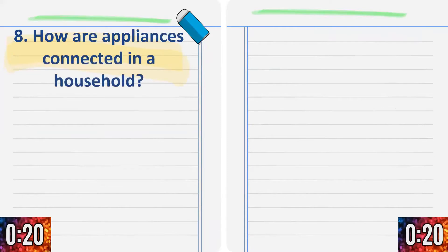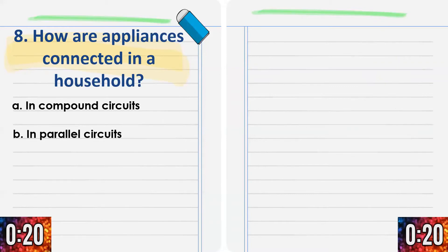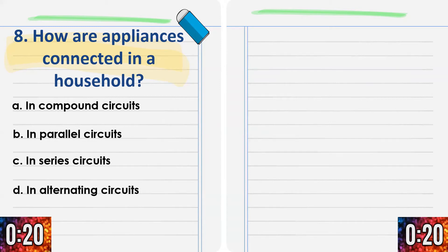For number 8: How are appliances connected in a household? A) In compound circuits. B) In parallel circuits. C) In series circuits. Or D) In alternating circuits. How are appliances connected in a household? A, B, C, or D?